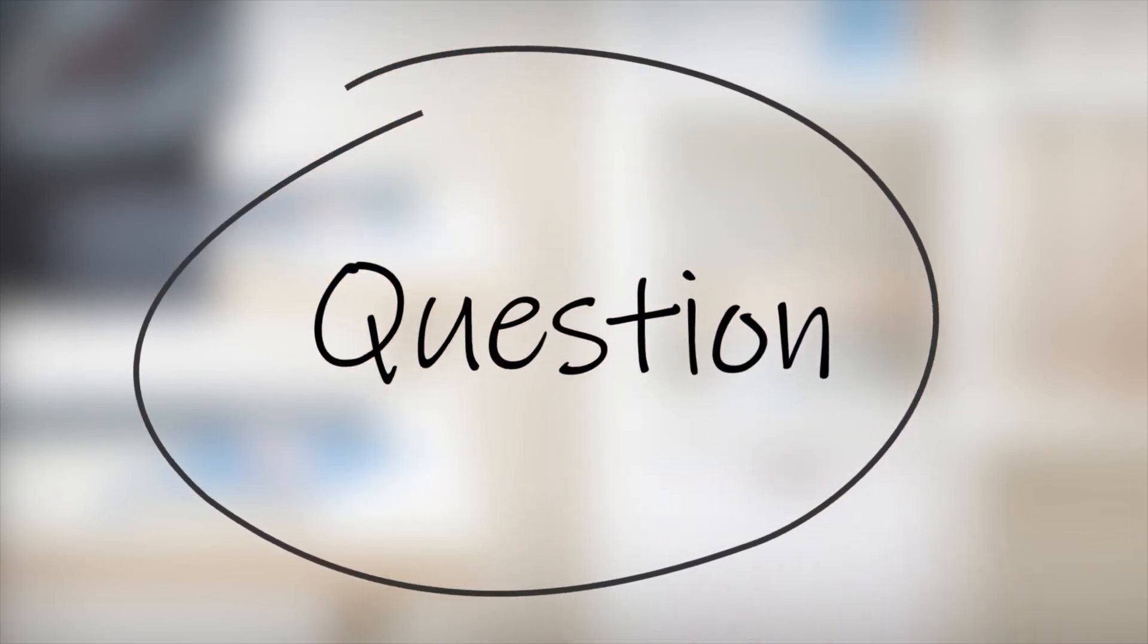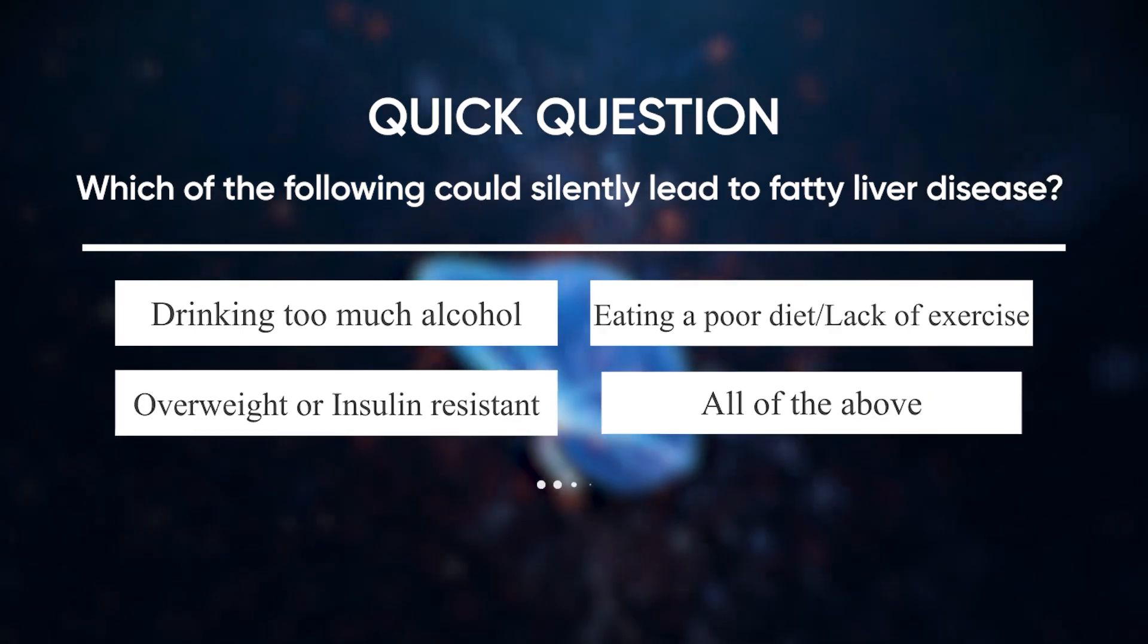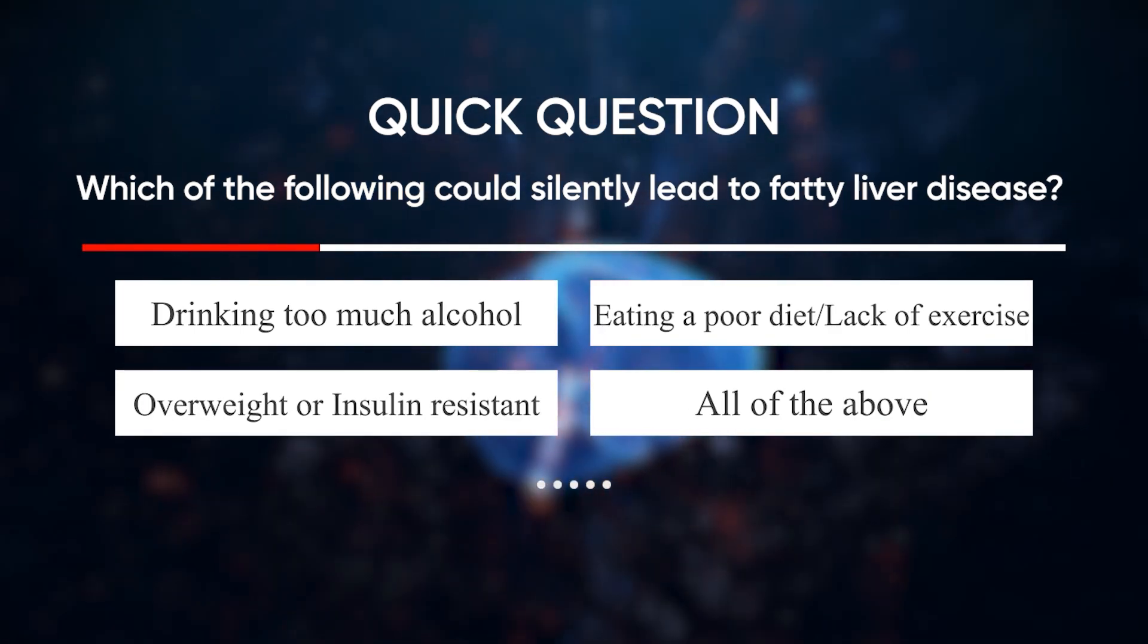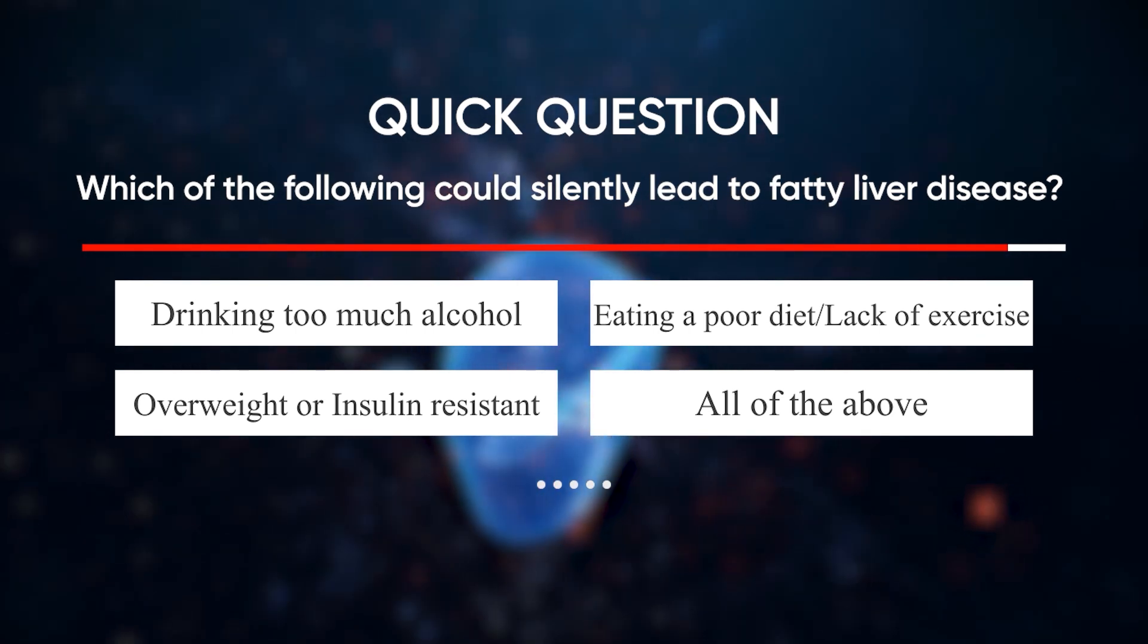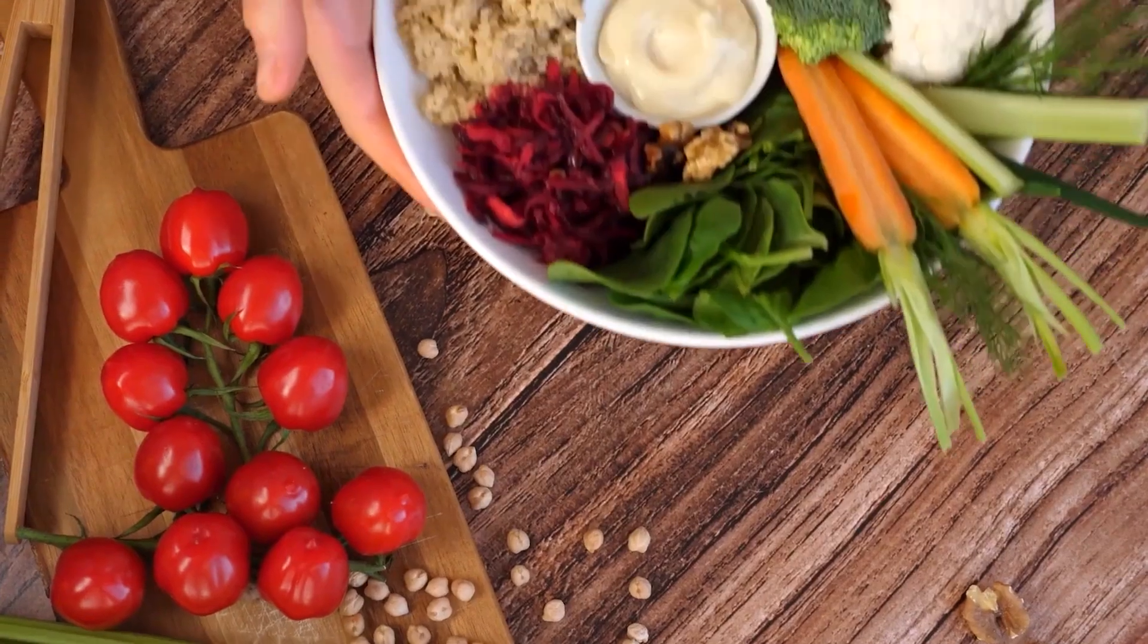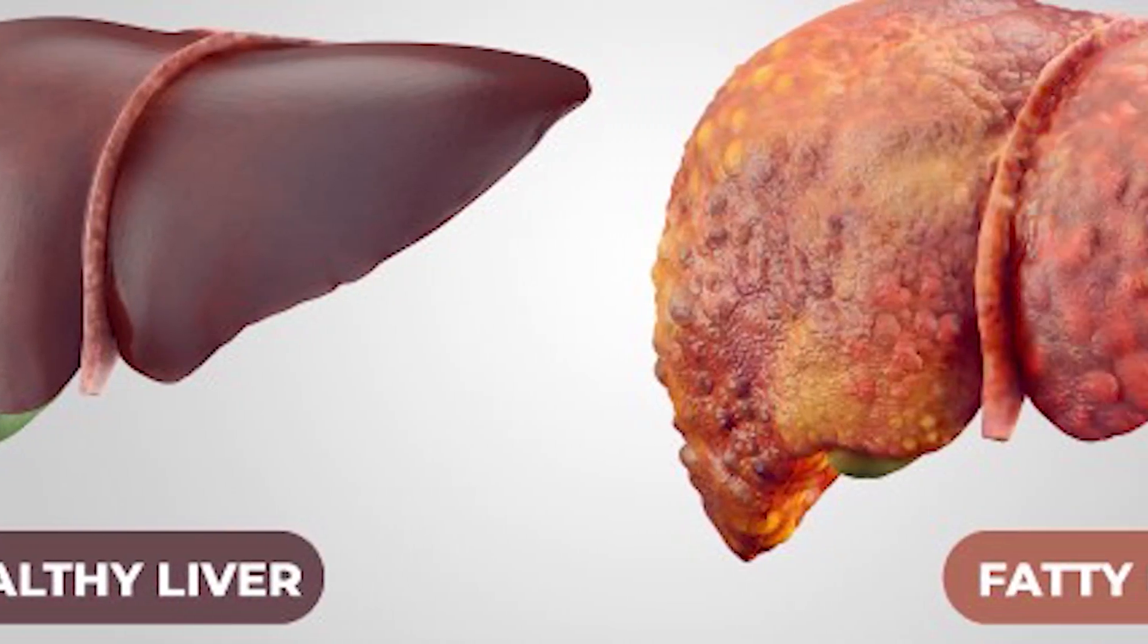Before moving forward, tell me which of the following could silently lead to fatty liver disease? Drinking too much alcohol, eating a poor diet and lack of exercise, being overweight or insulin resistant, and all of the above. But before we dive into the best nutrients for your liver, let's first understand what it really means to have a fatty liver.